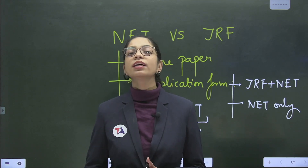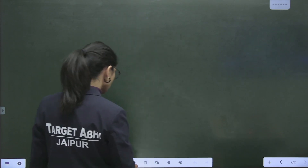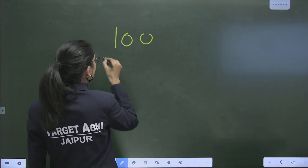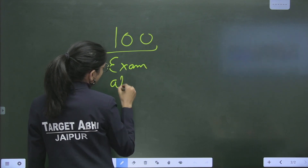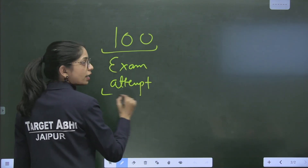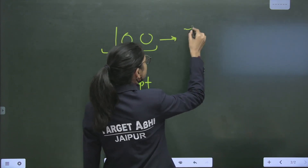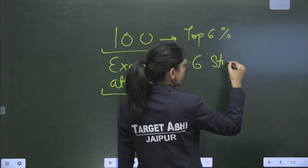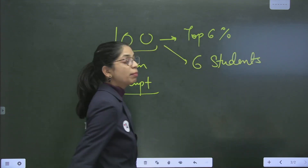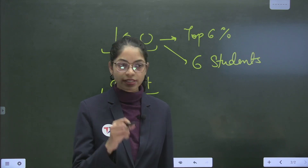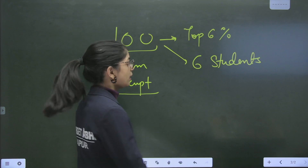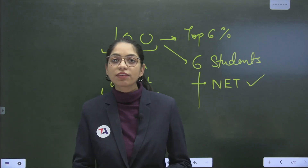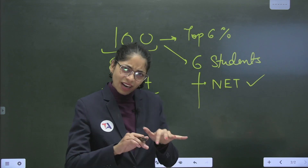Now, the last thing is about choosing these people — who are NET qualified and who are JRF qualified? To give you a simple example: if 100 people are attempting the exam, the top 6% — meaning 6 students out of 100 who appeared — are basically NET qualified. Now, who are JRF plus NET? Out of those 6 students, around 1 student — actually less than 1 student.